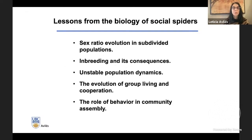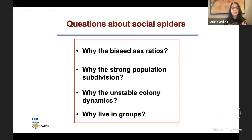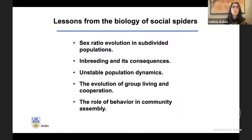We can ask a few questions about social spiders: Why do they have biased sex ratios? Why the strong population subdivision? Why the high rates of colony extinction and unstable dynamics? And why do they live in groups? These questions, listed in the order in which I actually started working on them, have taken me on a journey through different fields of evolution and ecology, touching on sex ratio evolution in subdivided populations, inbreeding and its consequences, unstable population dynamics, the evolution of group living and cooperation, and more recently, the role of behavior in community assembly.